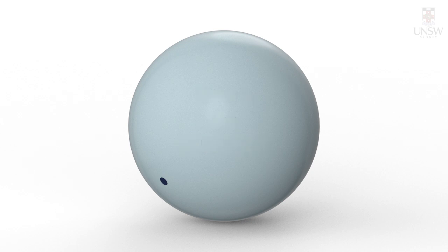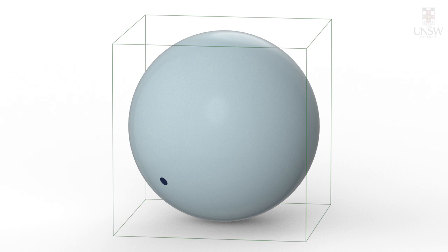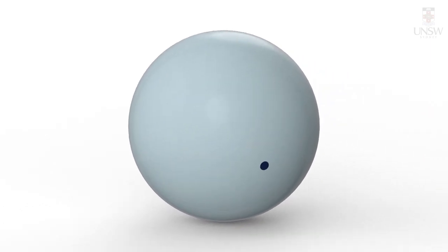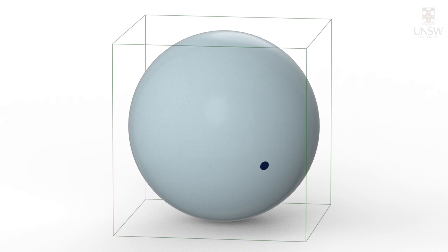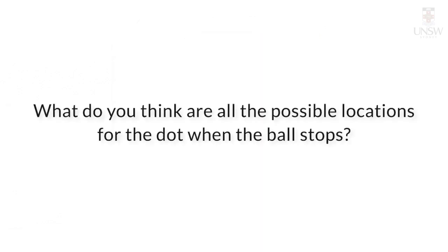To consistently determine this 3D location, we place a box over the ball. Let's roll it one more time. I'm sure you did not guess the correct location exactly. In fact, it is not possible to predict the next outcome with certainty. What do you think are all the possible 3D locations for the dot when the ball stops?